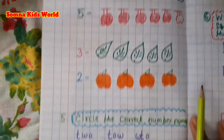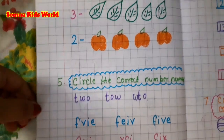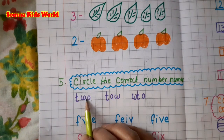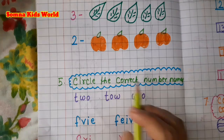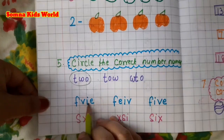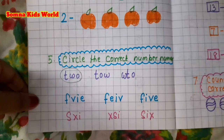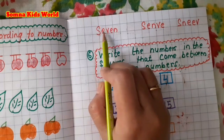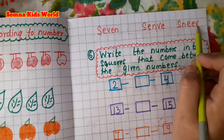Next is: circle the correct number names. Kids have to find the correct number name. For example, the first one is 2 — options are T-W-O, T-O-W, W-T-O — so the correct one is T-W-O, circle it. Next, for five: F-V-I-E, F-E-I, F-I-B, F-I-V-E — the correct one is F-I-V-E.